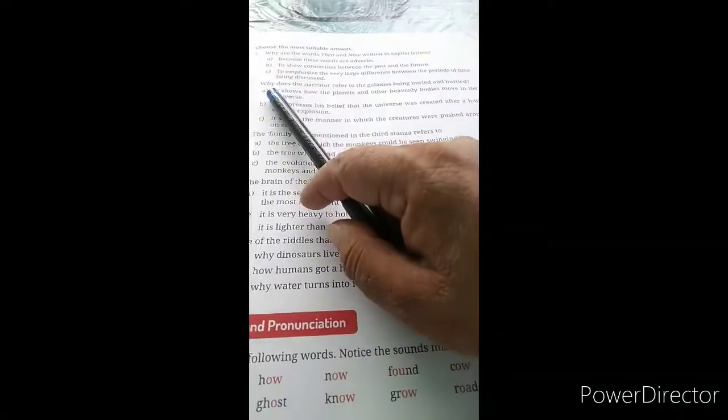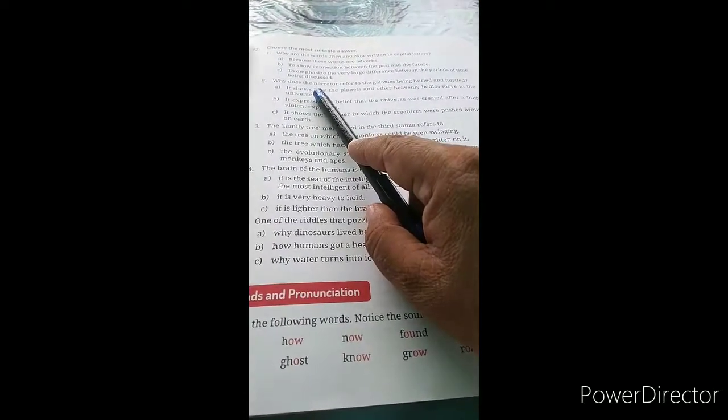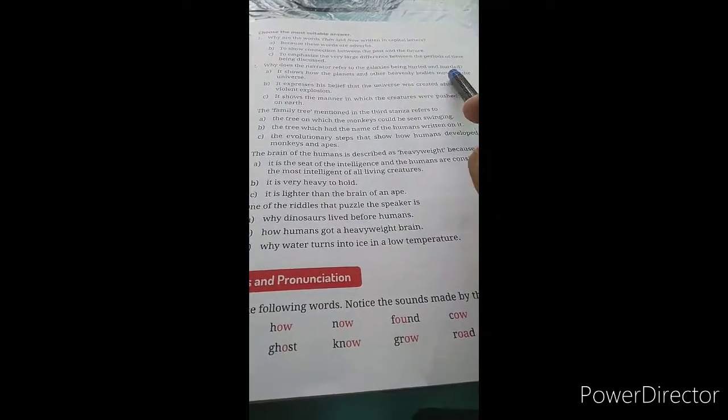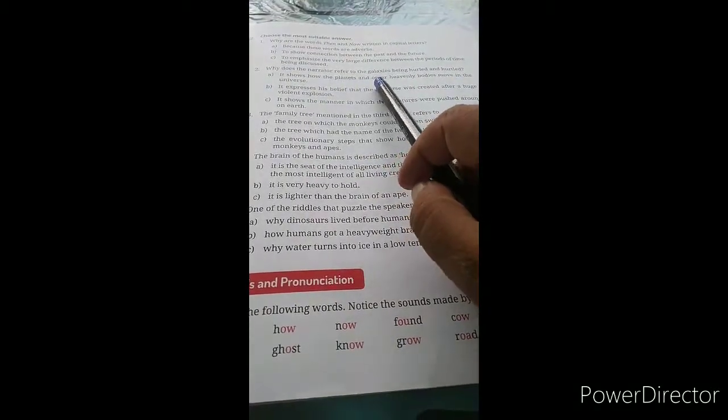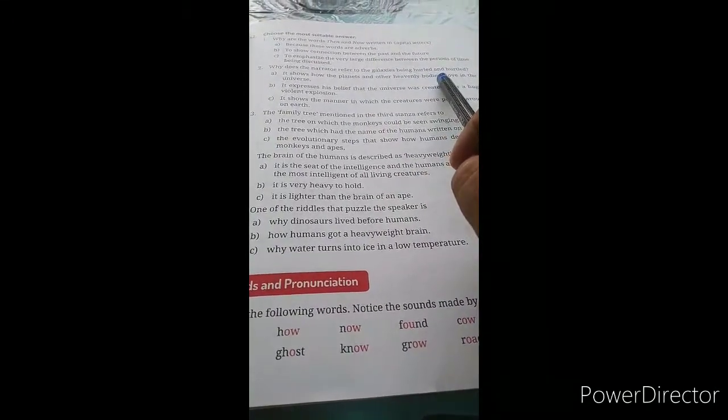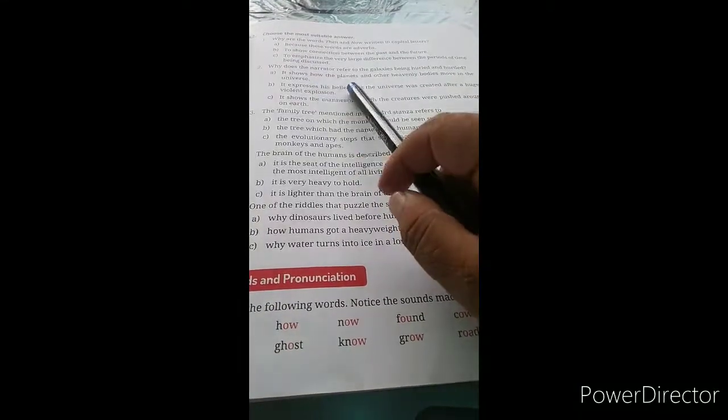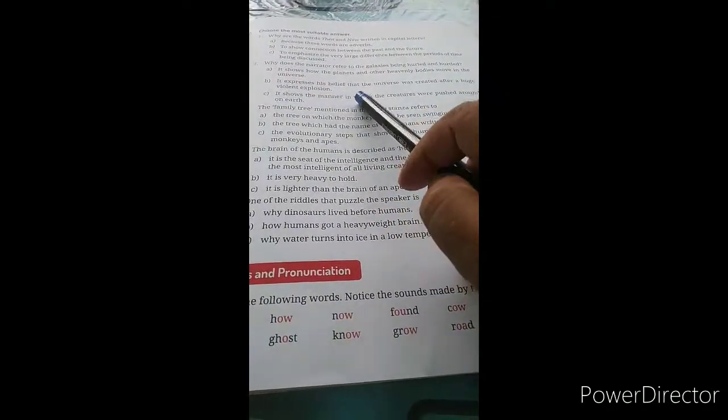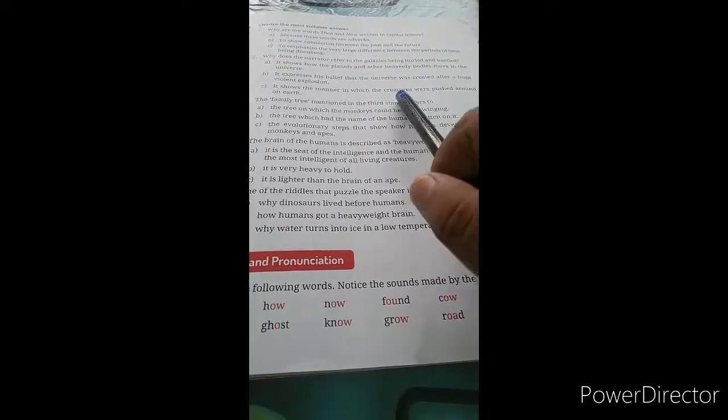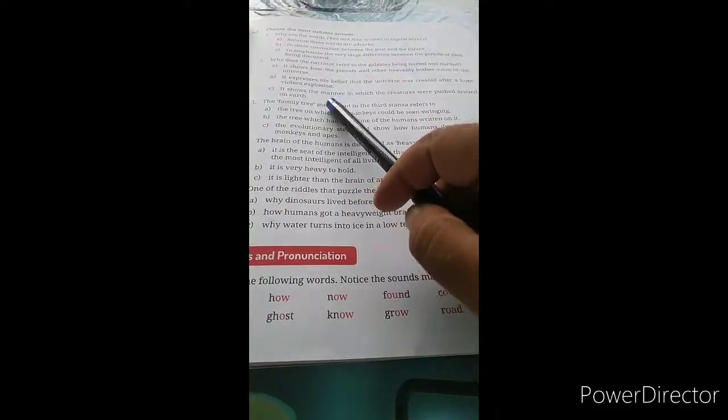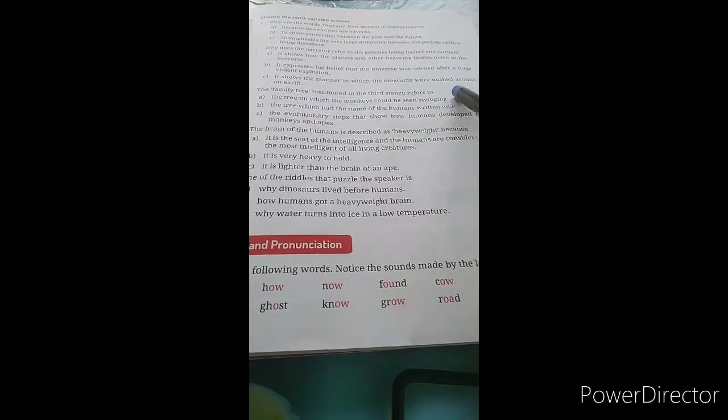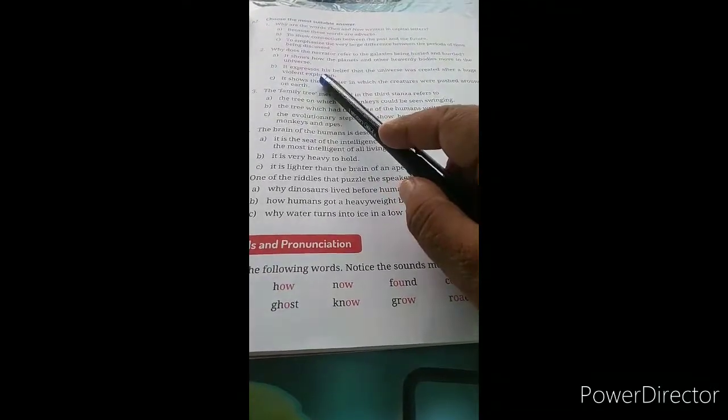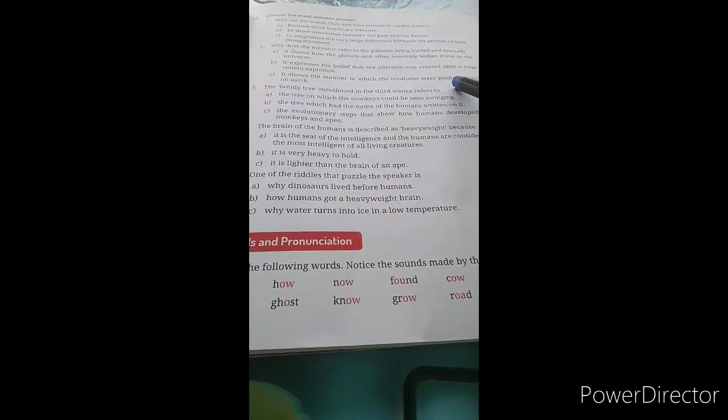Question two: Why does the narrator refer to the galaxies being hurled and hurtled? Three options: A - it shows how the planets and other heavenly bodies move in the universe, B - expresses his belief that the universe was created after a huge violent explosion, C - it shows the manner in which creatures were pushed around on earth. The answer is B.